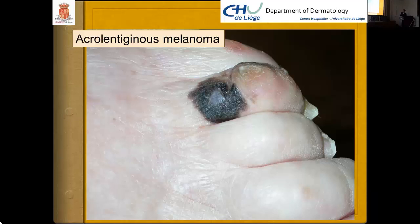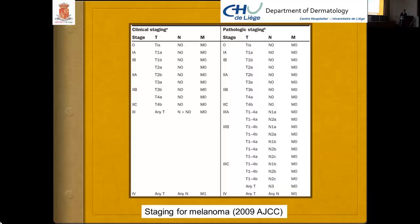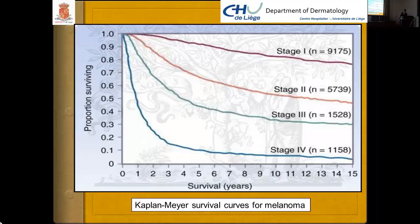Staging for melanoma is based on the classical TNM system, with stages from 0 to 4, and there is a new classification from the BGCC in 2012. Looking at survival curves, stage 1 melanoma has a 15-year survival of about 90%, while stage 4 disease has a survival rate near 0% at 15 years.